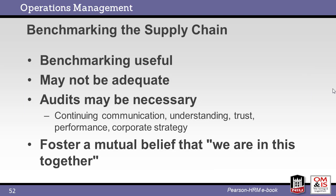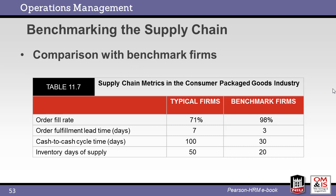Benchmarking the supply chain against industry standards is a good start. Process audits may be necessary — the goal of these audits is not to fix blame, but rather to look for improvement opportunities. To be successful, trust, communication, and a common strategy are necessary for all members of the chain. The goal is for all to succeed. This table shows how typical firms compare to benchmark firms. Benchmark firms are considered to be best in class. One issue, however, is that variation in customer expectations or product type may mean that comparison is not appropriate.